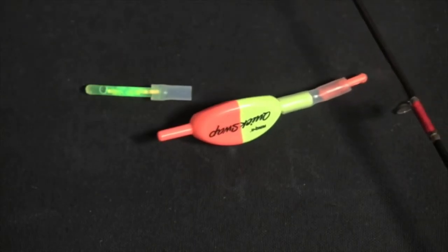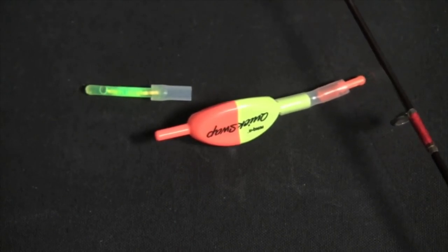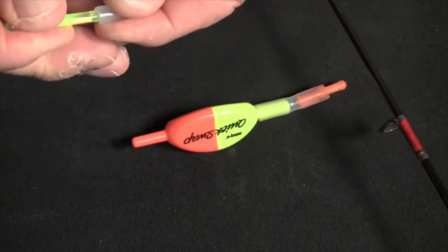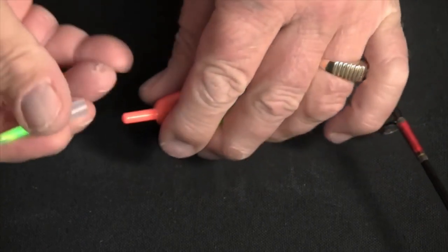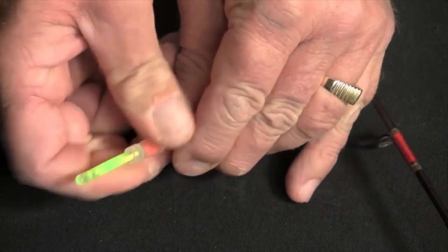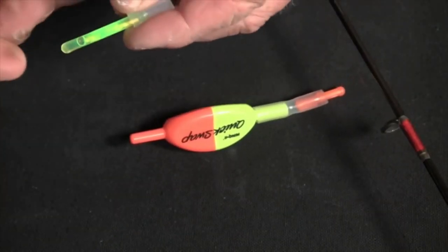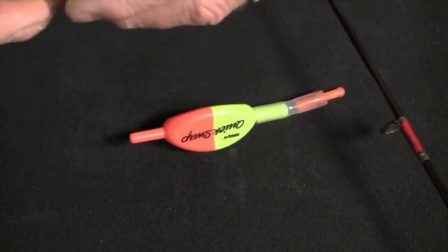The sun is set, it's getting dark, we want to fish at night. But now we want to make this from a daytime float into a nighttime float. So what we do is we take one of our silicone tubes and we simply plug that in on top of the bobber stem and we activate it by just bending it to light up the light. We shake it a little bit and then we simply plug it into the top of the tubing. So now we just went from a daytime float to a nighttime float instantly.